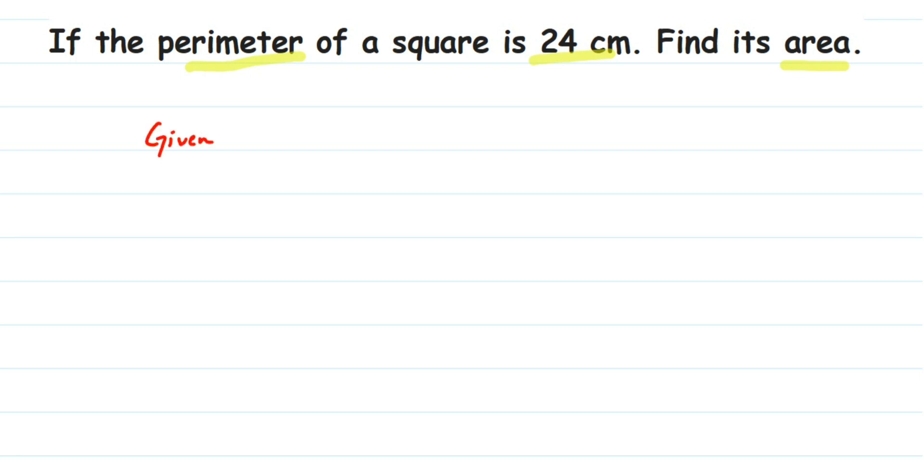Given: perimeter of square is equal to 24 centimeter. And we know perimeter of square is 4 into side, so 4 into side will be equal to 24. We want to find the value of side, so we're going to transpose 4 to the other side.